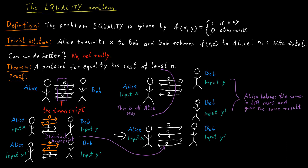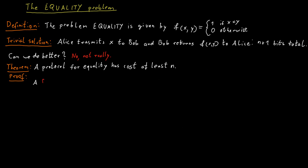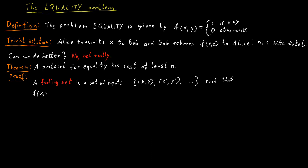Now with these observations, we can construct our proof. And in our proof, we will use something called a fooling set argument. The fooling set is a set of inputs — so x, y, x prime, y prime, and so on — such that all of those inputs result in the same function value. So f of x and y should be the same value as f of x prime and y prime, and so on. So all of them should lead to the same function value.